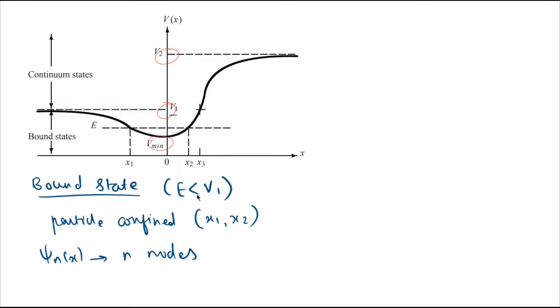The particle is confined between x1 and x2. Also, the wave function ψn(x) of a one-dimensional bound state has n nodes, which implies that ψn(x) vanishes n times.